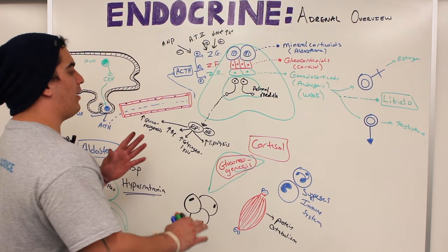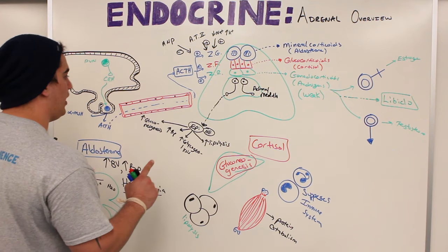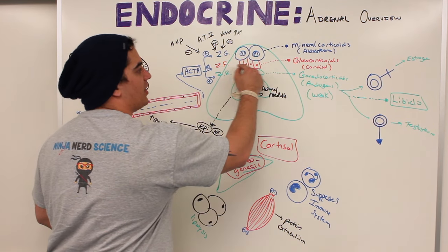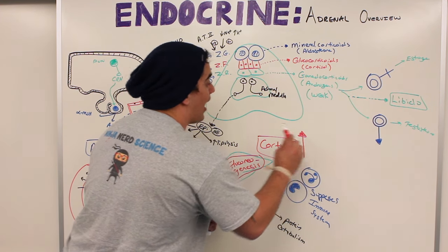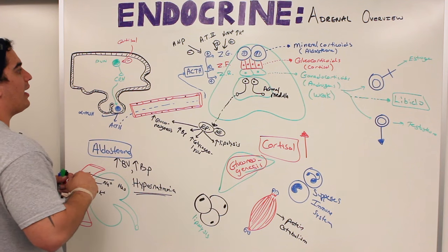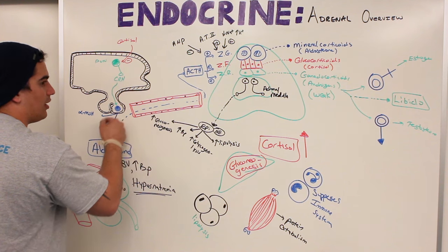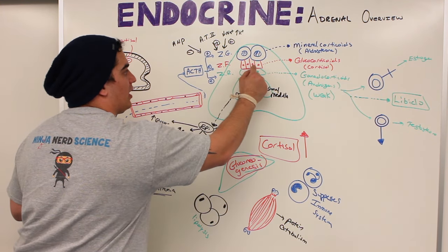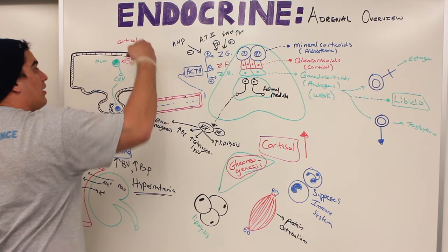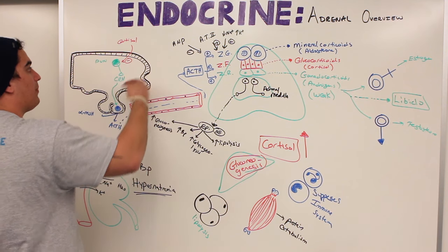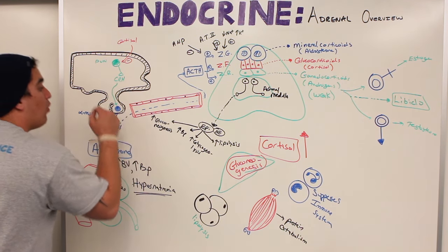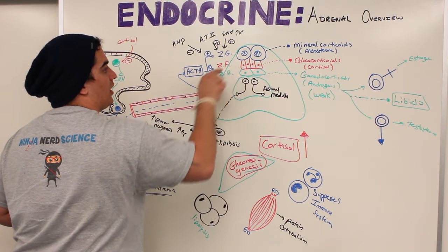Now, regarding cortisol's negative feedback mechanism: when cortisol levels rise high, cortisol exerts negative feedback — causing less corticotropin-releasing hormone to be made, less adrenocorticotropic hormone to be made, and therefore the zona fasciculata produces less cortisol. Conversely, if cortisol levels are low, there is less inhibitory input, so more CRH is produced, which stimulates the anterior pituitary to make more ACTH, which then stimulates the zona fasciculata to make more cortisol.